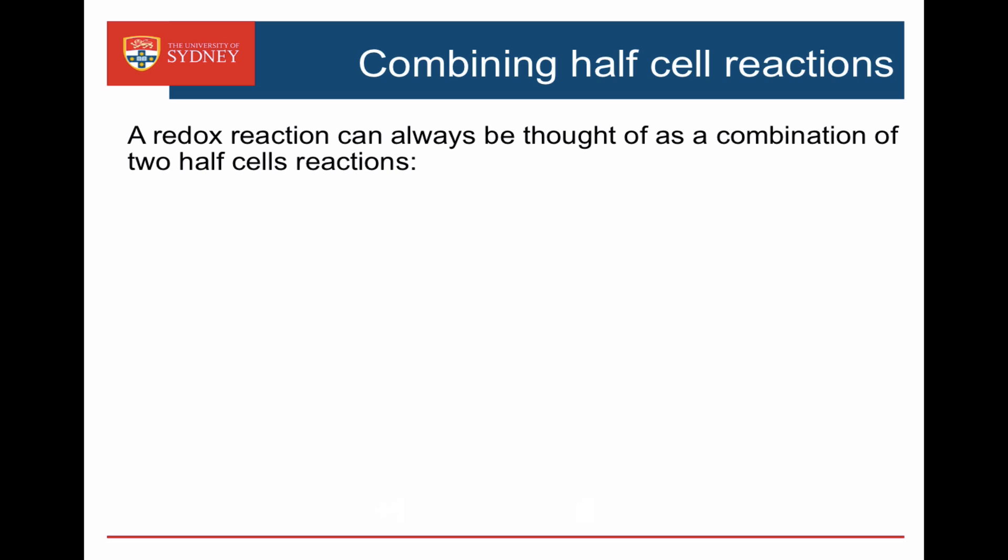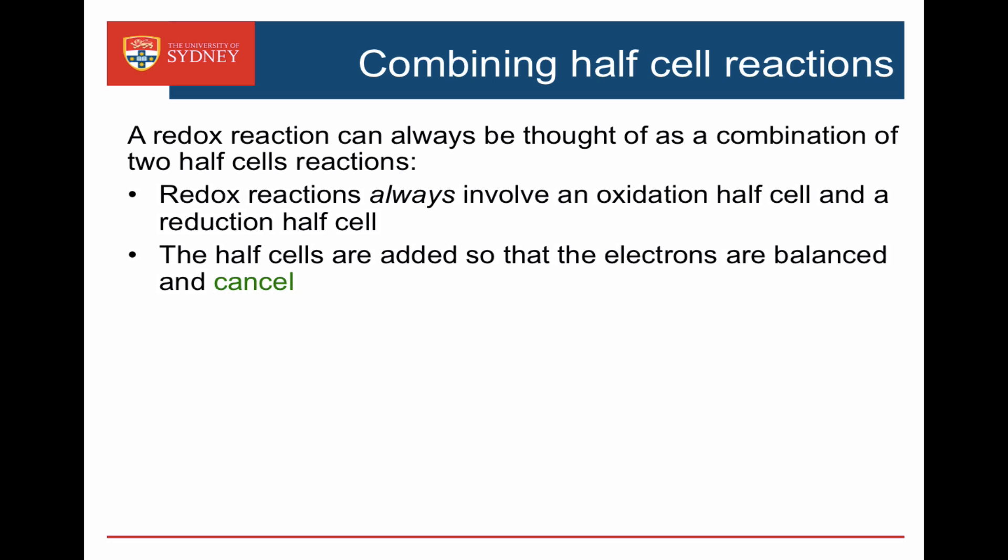Any redox reaction can always be thought of as a combination of two half-reactions or half-cell reactions. One of these will always be an oxidation and one will be a reduction. We need to make sure that the electrons aren't left over, so we need to balance them for the two reactions and then cancel them out.